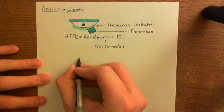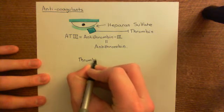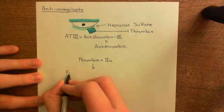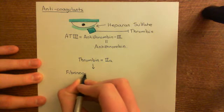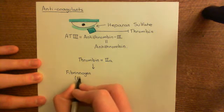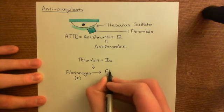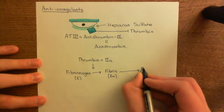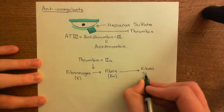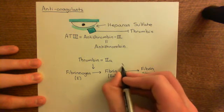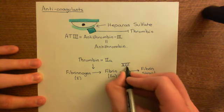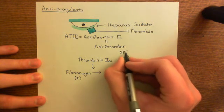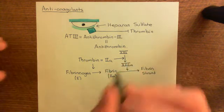Thrombin comes from prothrombin, which is the inactive form of the enzyme — the zymogen, also known as factor 2. If you get activation of factor 2 to 2a, it's going to produce fibrin through this pathway: it converts fibrinogen into fibrin, and it also activates factor 13 into factor 13a, which then assembles the fibrin into fibrin strands.